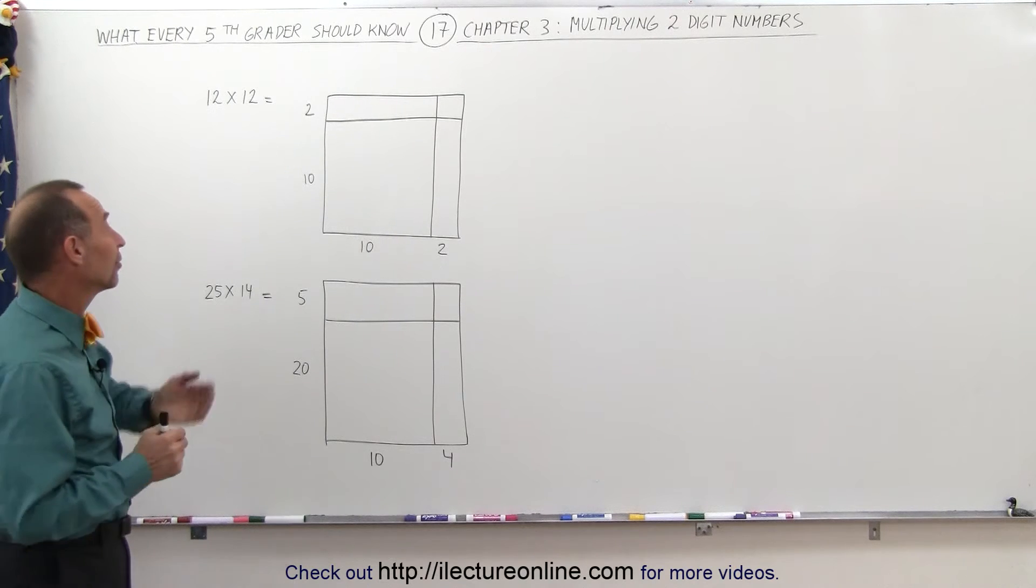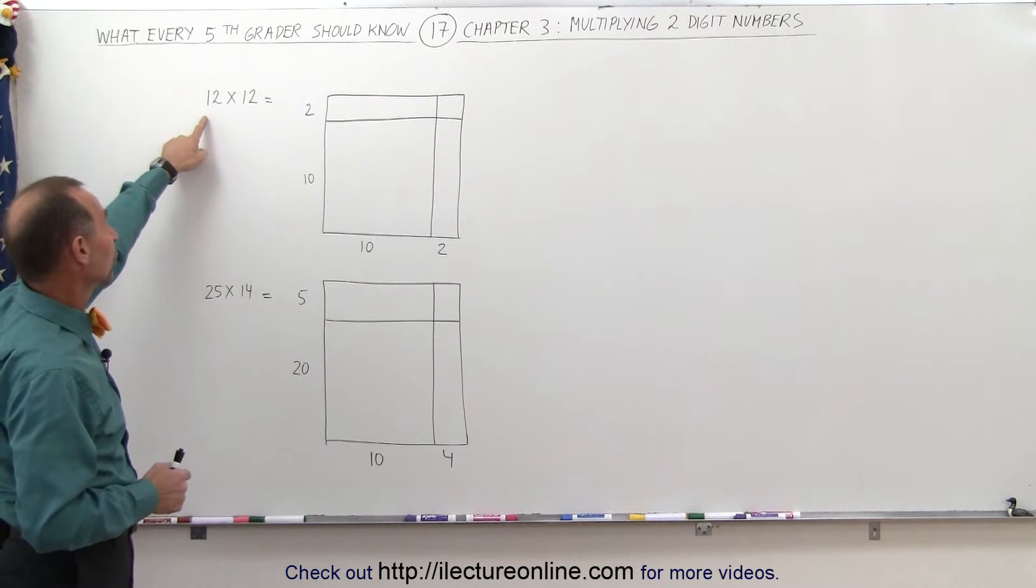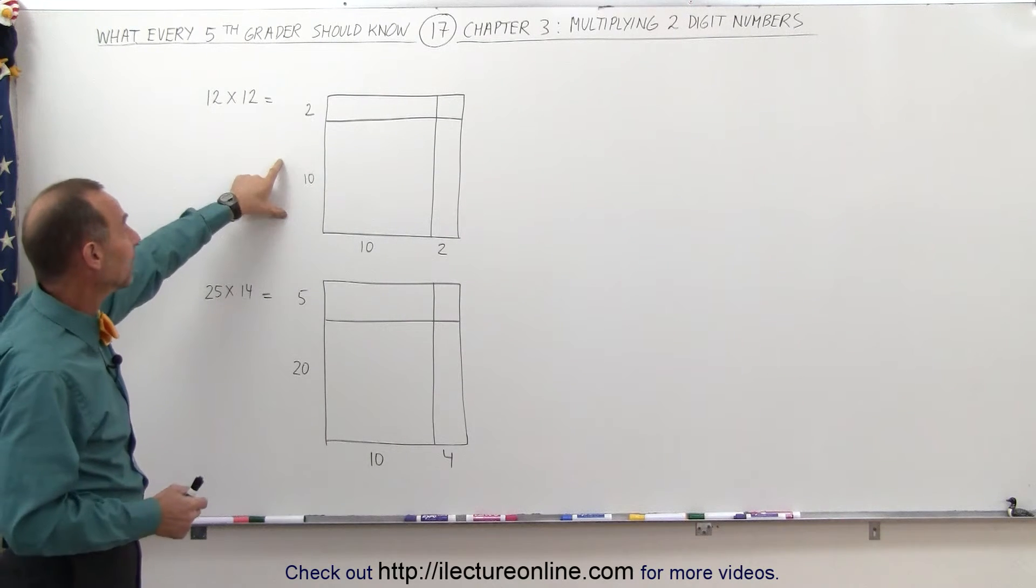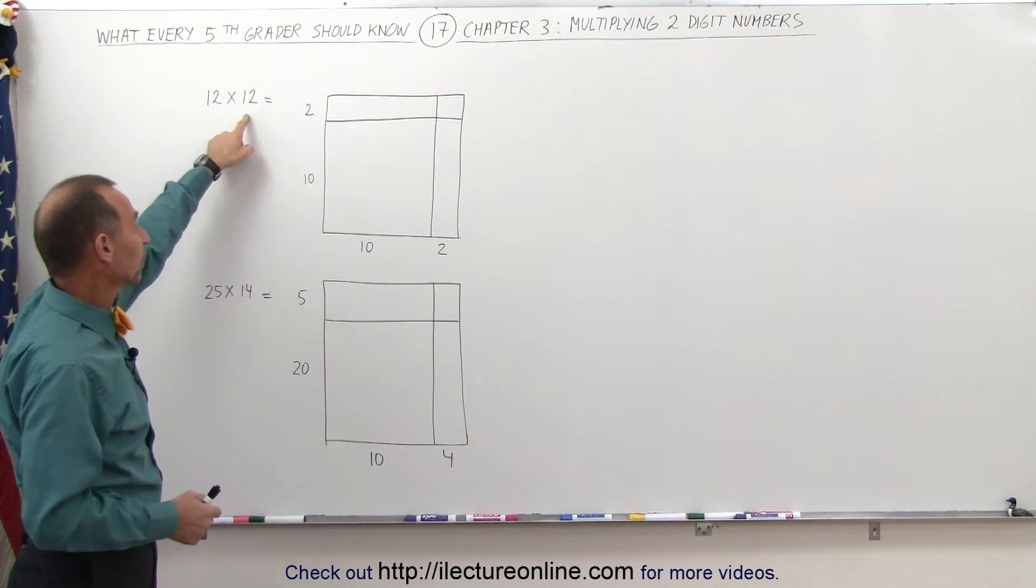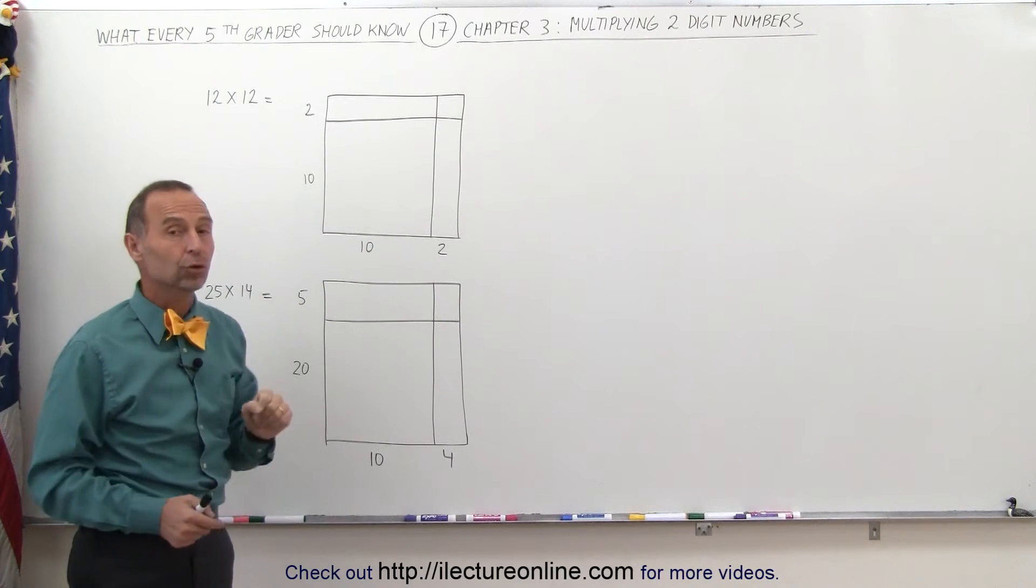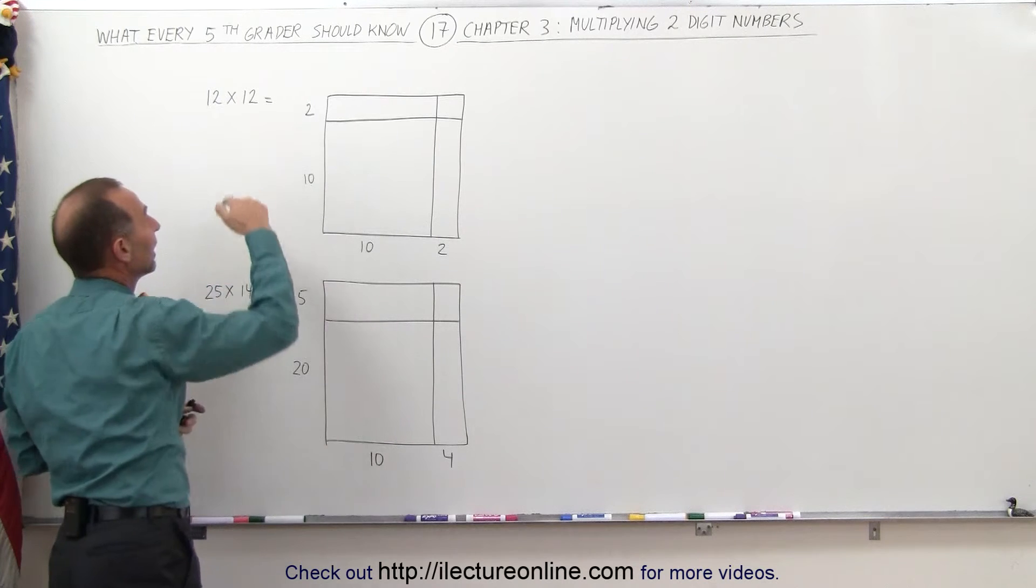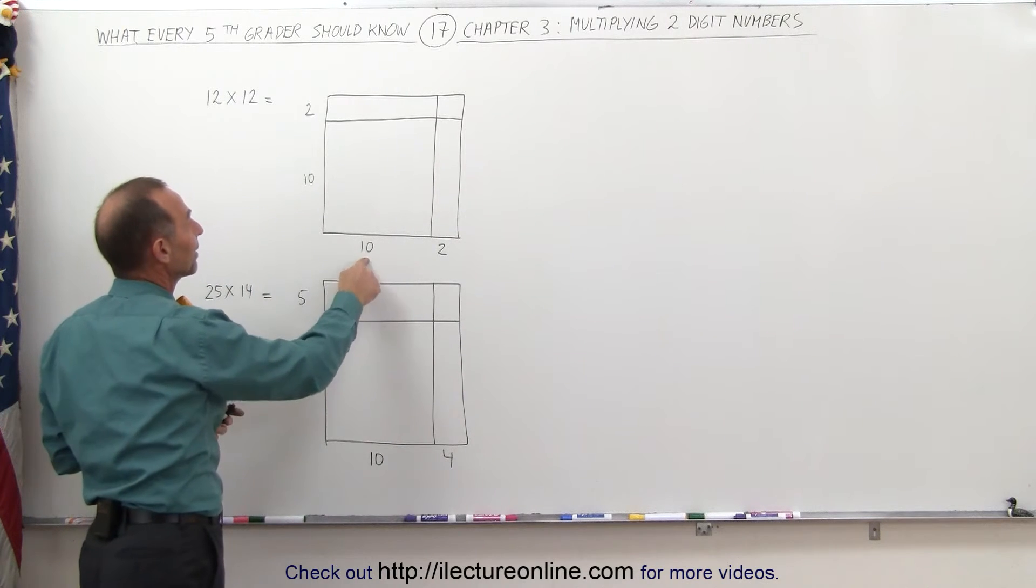What we've done here is taken up, for example, the number, the multiplication 12 times 12. The number 12 can be split up into 10 plus 2 and the other number 12 can be split up in 10 and 2. In other words, when we multiply 12 times 12,